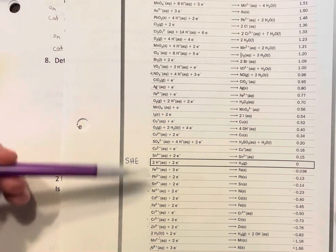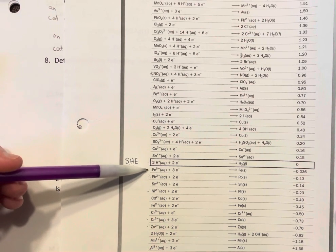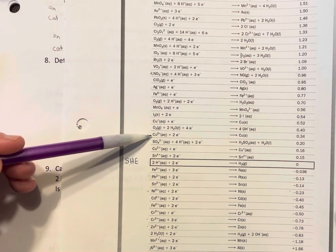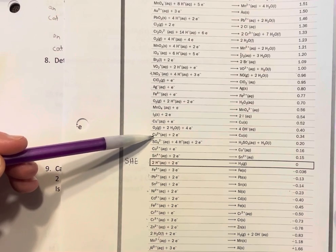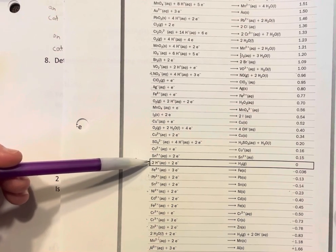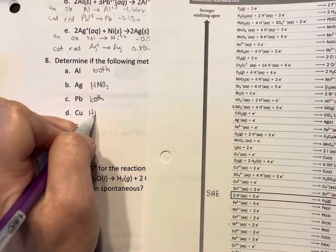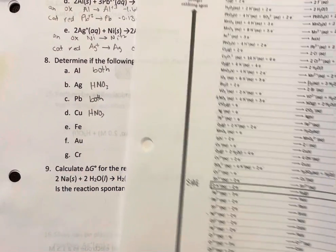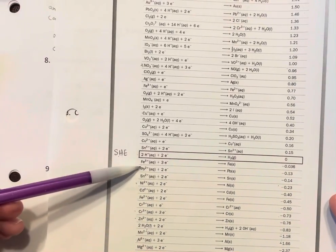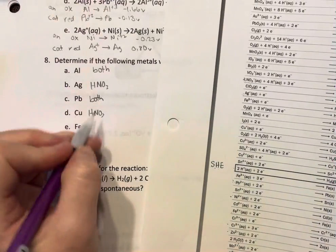Lead solid, that's going to be both because it's below the SHE. Copper, let's see if I got copper plus one on here anywhere. Oh there we go, okay so both of them here we have above the SHE but below nitric acid. Iron, well there's two irons but both of them are below the SHE.